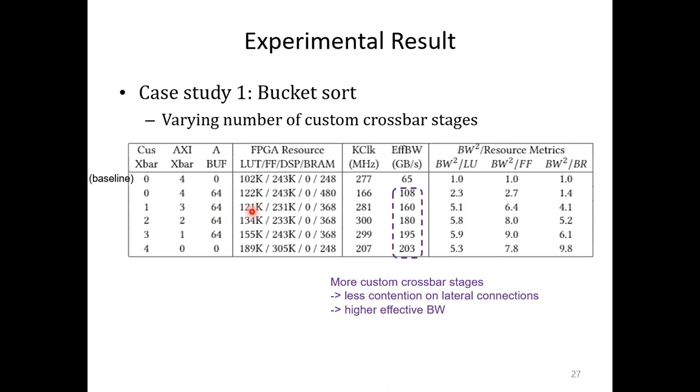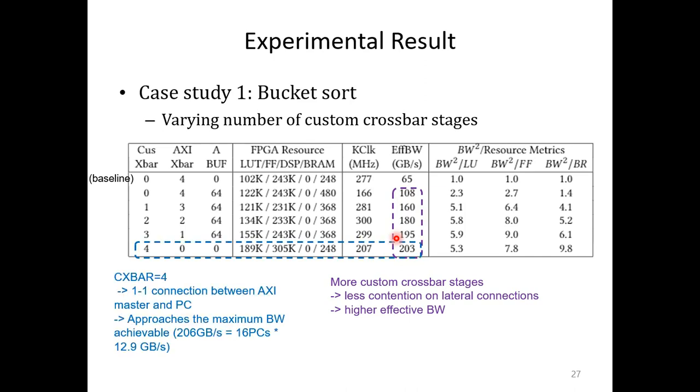As we add more custom crossbar stages, we can reduce the traffic through the shared lateral connections and achieve higher effective bandwidth. When we completely replace the built-in crossbar with the custom one, the effective bandwidth approaches the maximum bandwidth possible. Compared to the baseline implementation, there is about 3x improvement.